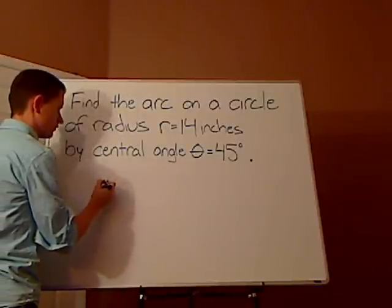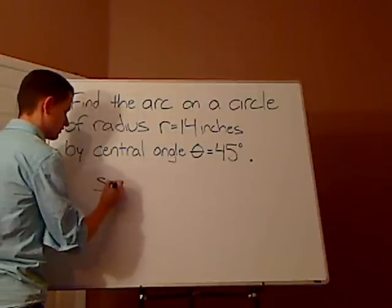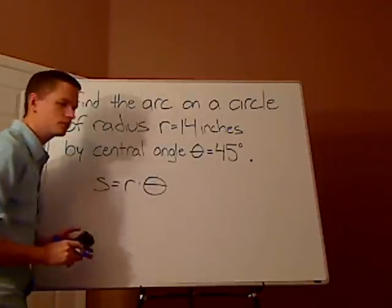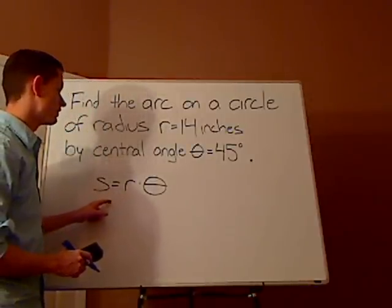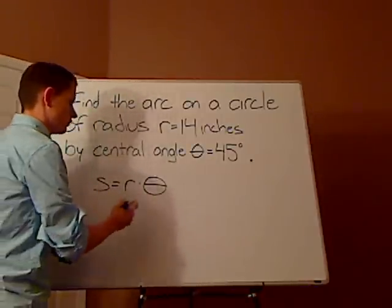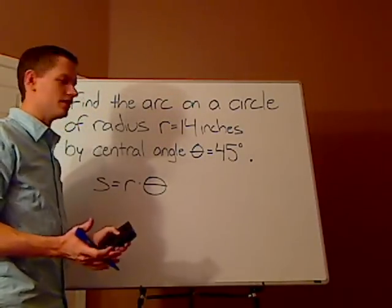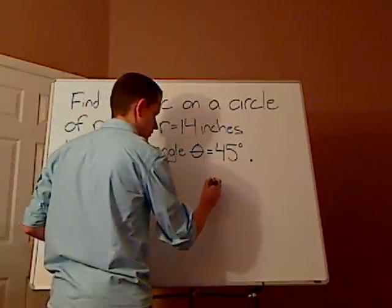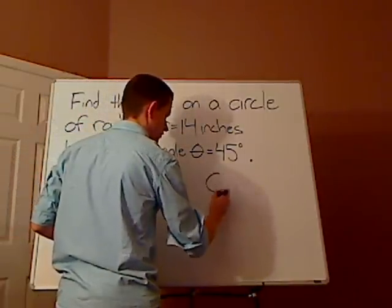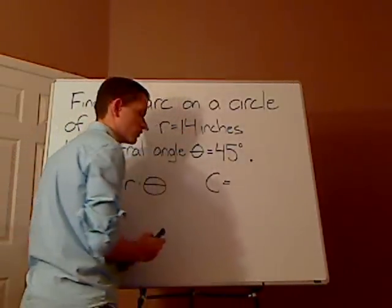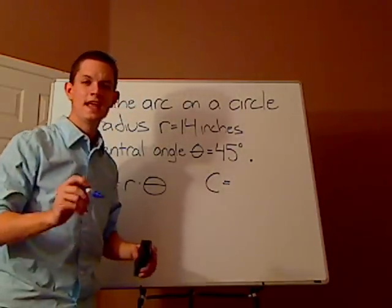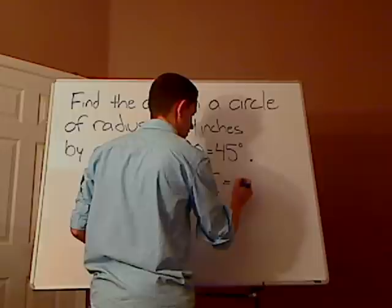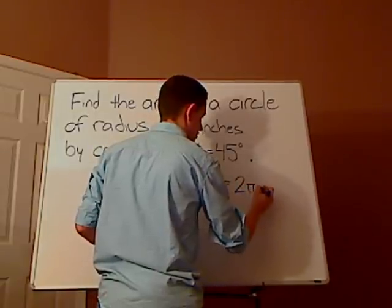What you're going to be doing is you're going to be taking the arc length, which is s equals r times theta. Now, it's very important to know where does the arc length come from? What is it? If you know what it is, then it's easy to remember this formula. Arc length comes from a circle or circumference, I should say. The circumference is the distance around the circle. And so that's 2 pi r.